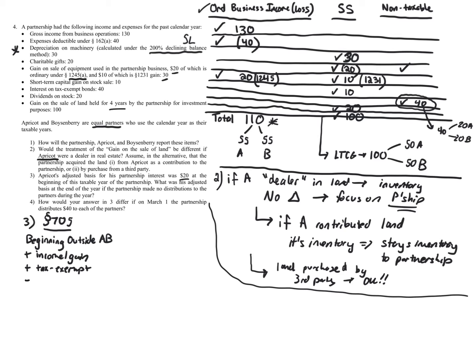We also subtract the partner's share of losses and deductions, and subtract the share of non-deductible items. If we didn't remove non-deductible items, you'd get a benefit you're not allowed — no double tax benefit. Finally, we subtract distributions, but under a dotted-line separation: in simple distributions, we do everything above first, then account for all distributions treated as occurring at year-end.